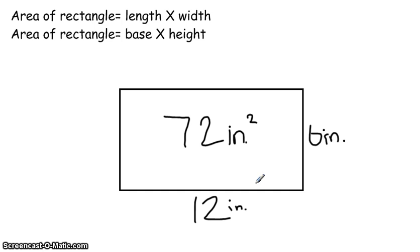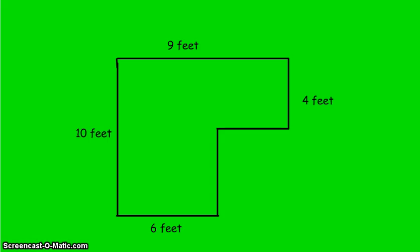That was a very simple rectangle. So what we're going to look at today is how to find the area of some more complicated shapes. Take a look at this shape — this is obviously not a regular rectangle. This is what we would call an irregular rectangle. You can see that it's kind of missing a piece. We do need to know how to find the area of these kinds of shapes, and there are three steps to doing so.